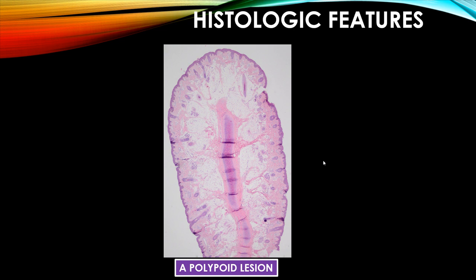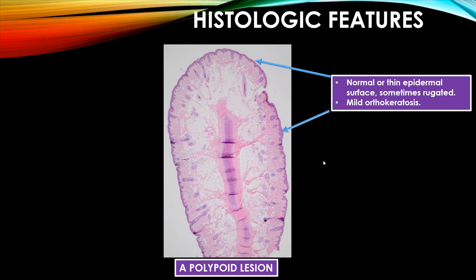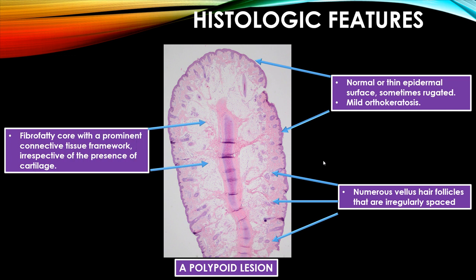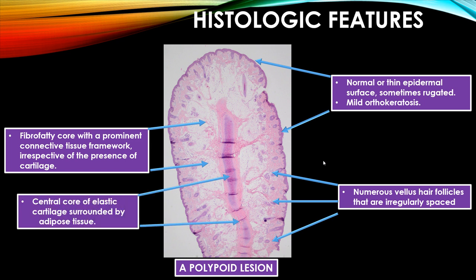Histologic features: It is a polypoid lesion covered by normal or thin epidermal surface, sometimes rugated, associated with mild orthokeratosis. The sub-epithelium shows numerous vellus hair follicles that are irregularly spaced. It shows a fibrofatty core with a prominent connective tissue framework, irrespective of the presence of cartilage. There is a central core of elastic cartilage surrounded by adipose tissue.